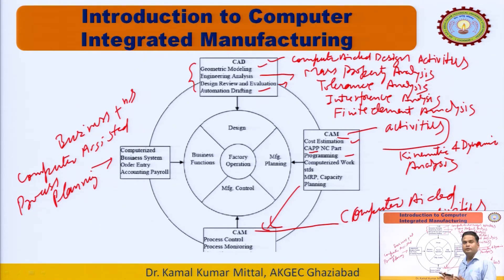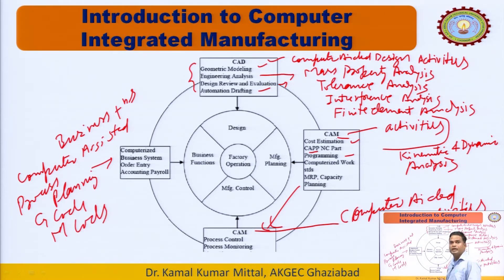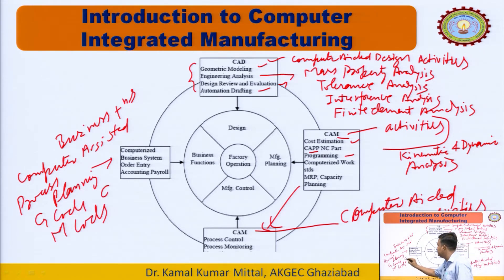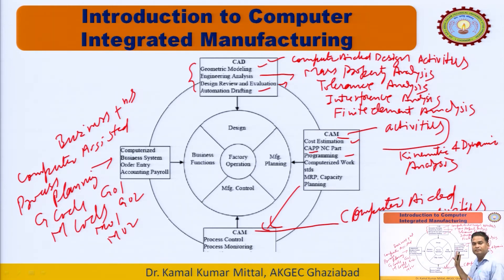Then comes part programming. For CNC machines, there are part programs with different codes like G-codes — preparatory codes used for movements such as circular interpolation and linear interpolation, e.g., G01, G02 — and M-codes, or miscellaneous codes, like M01, M02. These include commands to start the program, start the spindle, start and stop coolant, and stop the spindle and program.